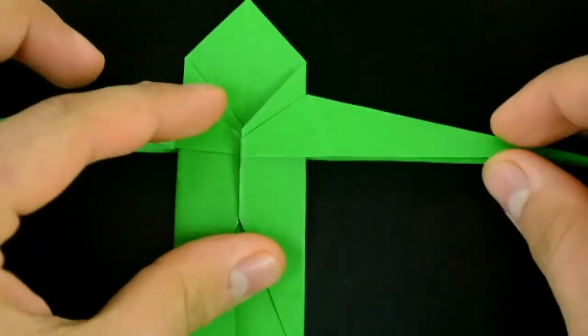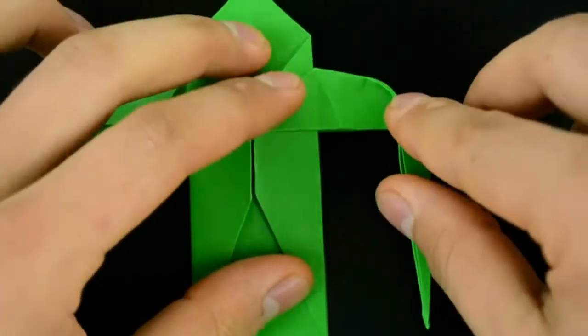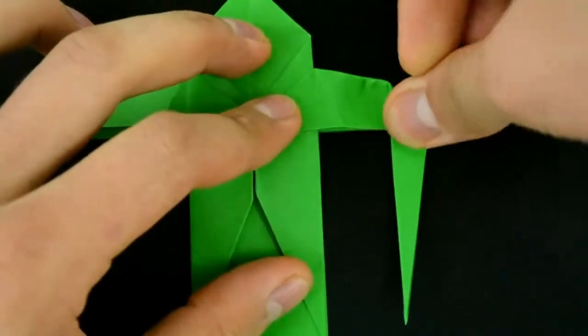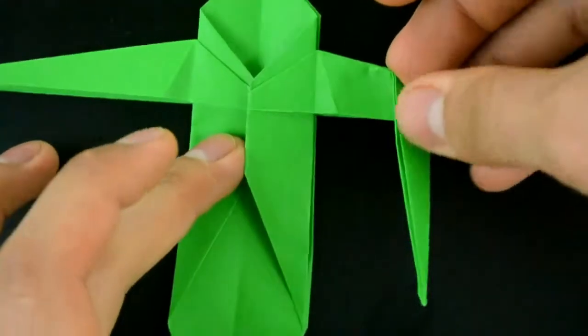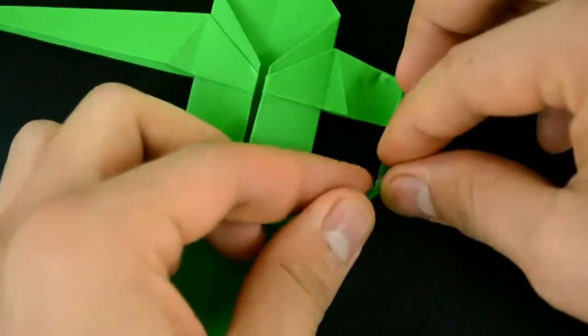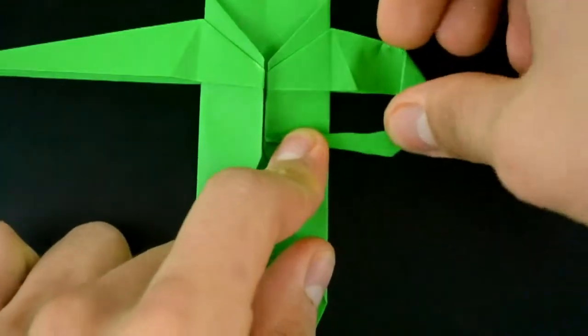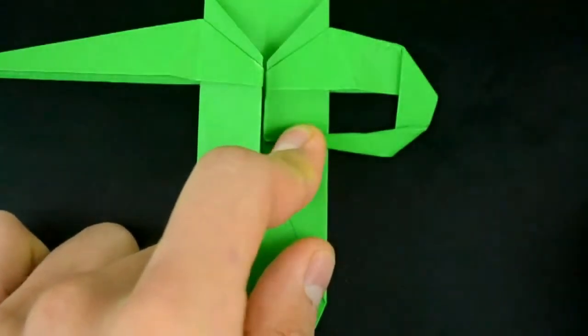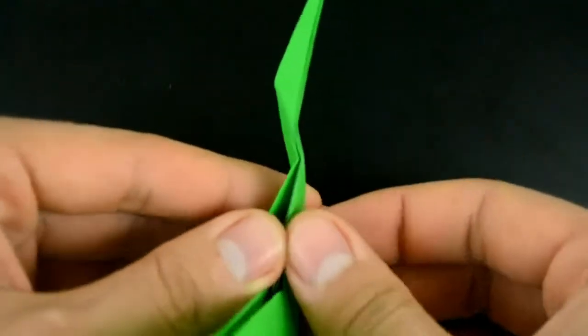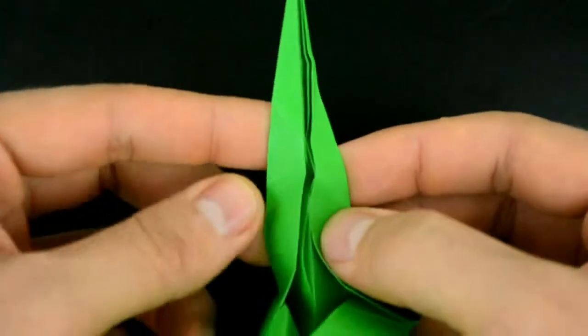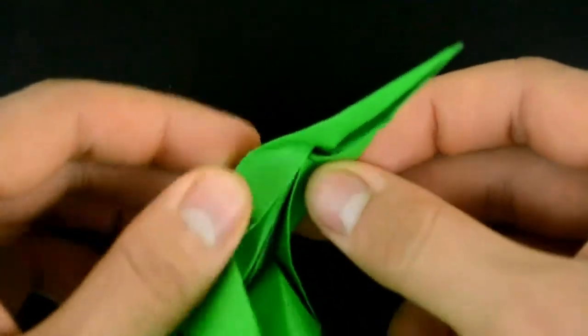First, on the right side, fold this flap down more or less here. Then the same flap, fold to the left side almost until the middle. And undo. Now using the first two diagonal creases, make a reverse fold in this flap. Like this.